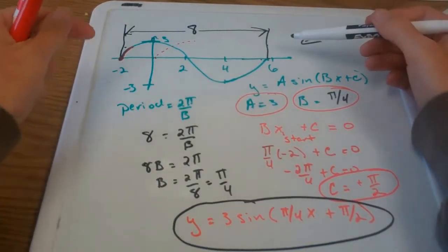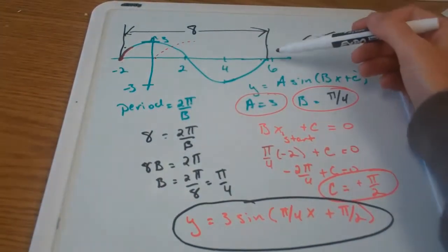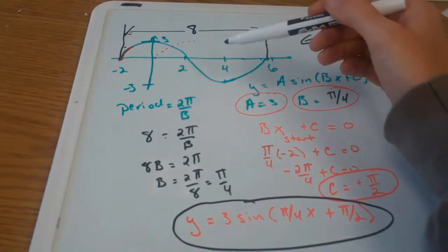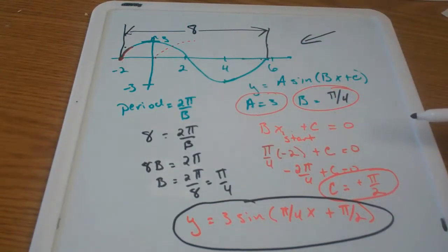set your window, make sure you're in radian mode to go from x equals negative 2 to x equals 6, and from y equals negative 3 to positive 3.